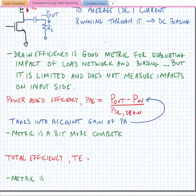This metric takes into account the gain of the PA. The metric is a bit more complete because we do include what's happening at the input side of the amplifier, but it's misleading if the gain is low.